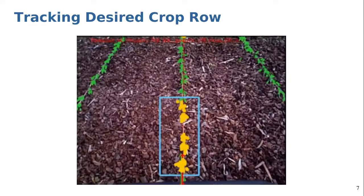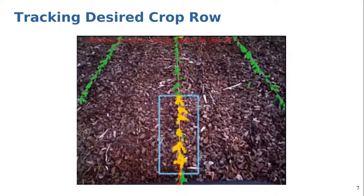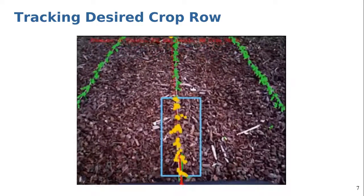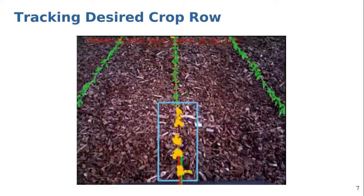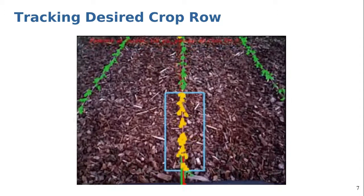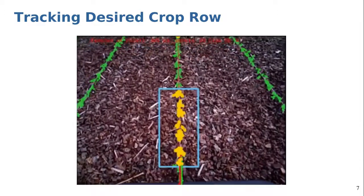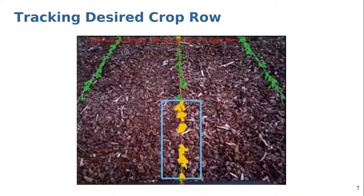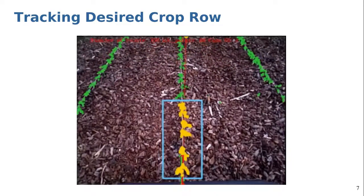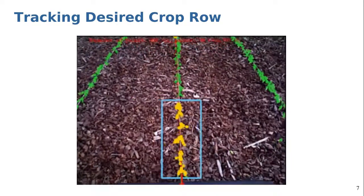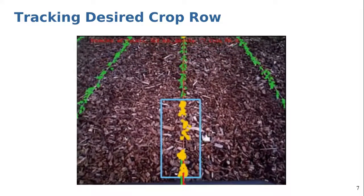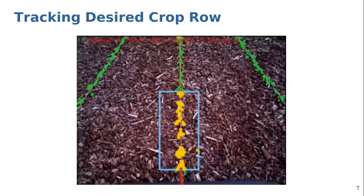To track a desired crop row we use a fixed size sliding window. In such a way that for every new camera image we update its position by averaging the positions of crops located in the desired row and inside the window. Updating the position of this window continuously allows for tracking a crop row and ensures that the robot follows it up to its end.